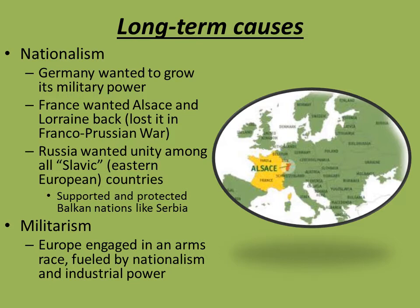Russia wanted what it called Pan-Slavism — unity among the Slavic countries of eastern Europe, areas like Slovakia, Poland, Hungary, and Yugoslavia. Russia saw all of those countries as having a common ancestral thread and wanted to unify those areas. As a result, they supported and protected nations in the Balkans, like Serbia. If Serbia was attacked, Russia had pledged to support it.